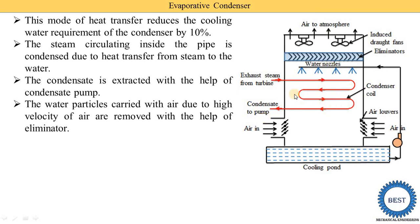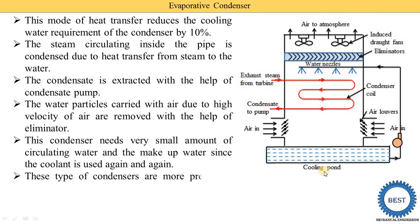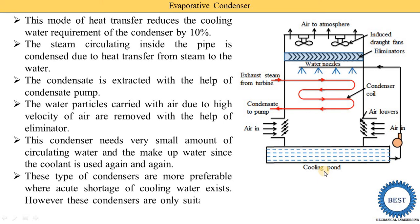Air and water vapor are mixed, so there is a chance that water vapor moves into the atmosphere. To avoid this, eliminators are used — their function is to remove water particles from the air. This condenser needs a very small amount of circulating water and makeup water since the coolant is used again and again. Some water vapor collected on the eliminator is condensed and returned to the cooling pond, so very little makeup water is required. These types of condensers are preferred where there is an acute shortage of cooling water.